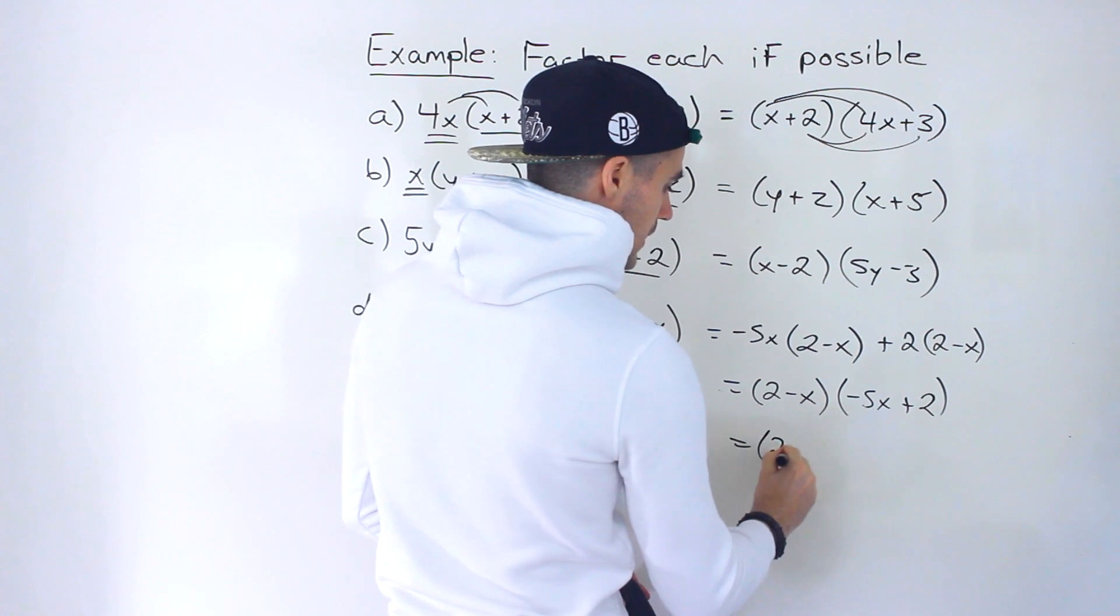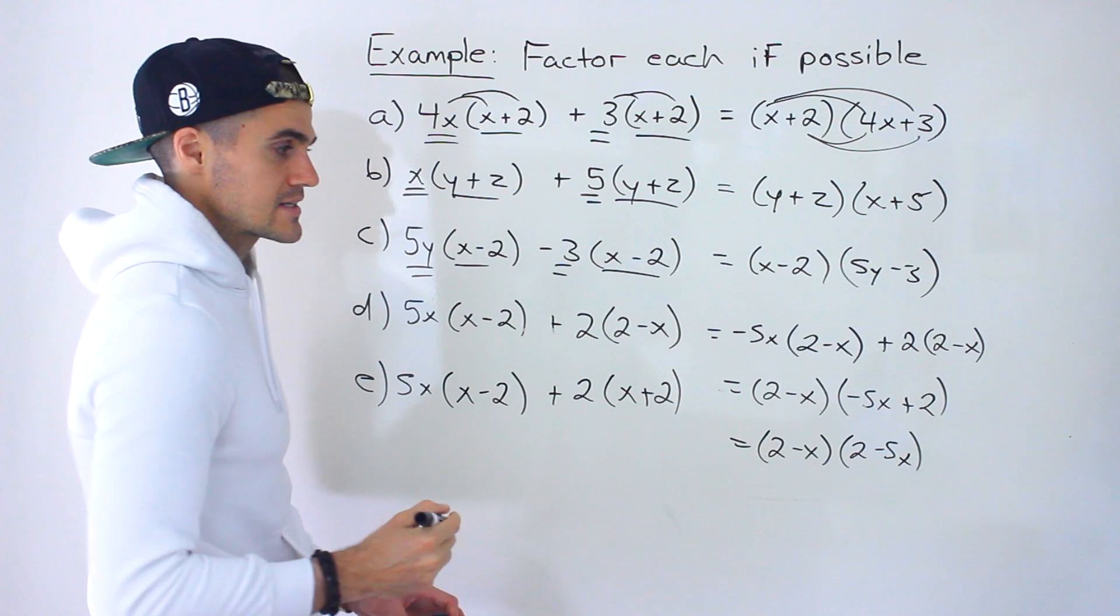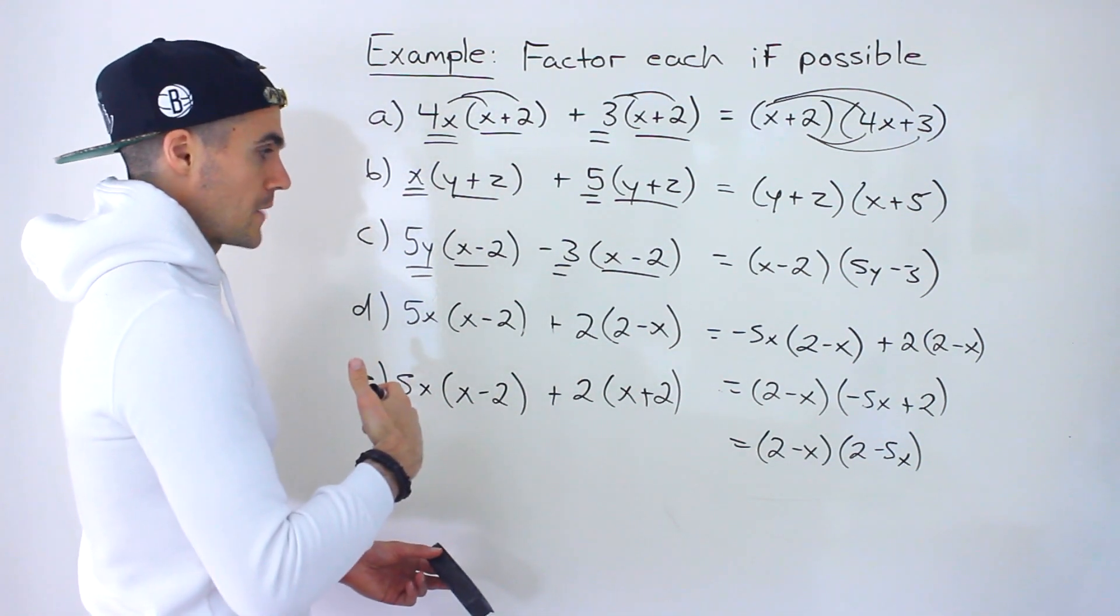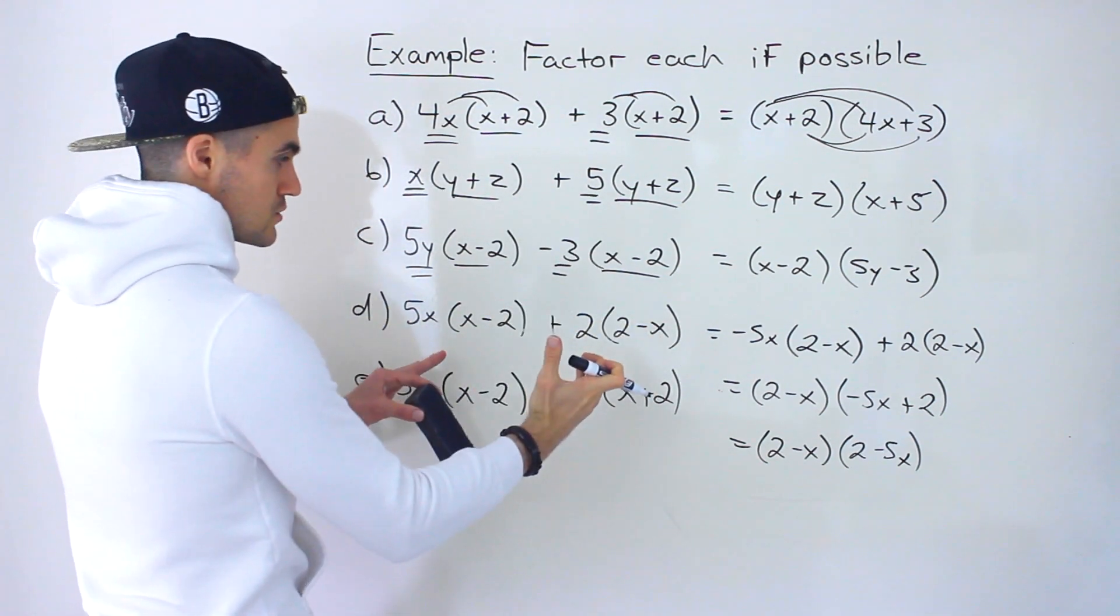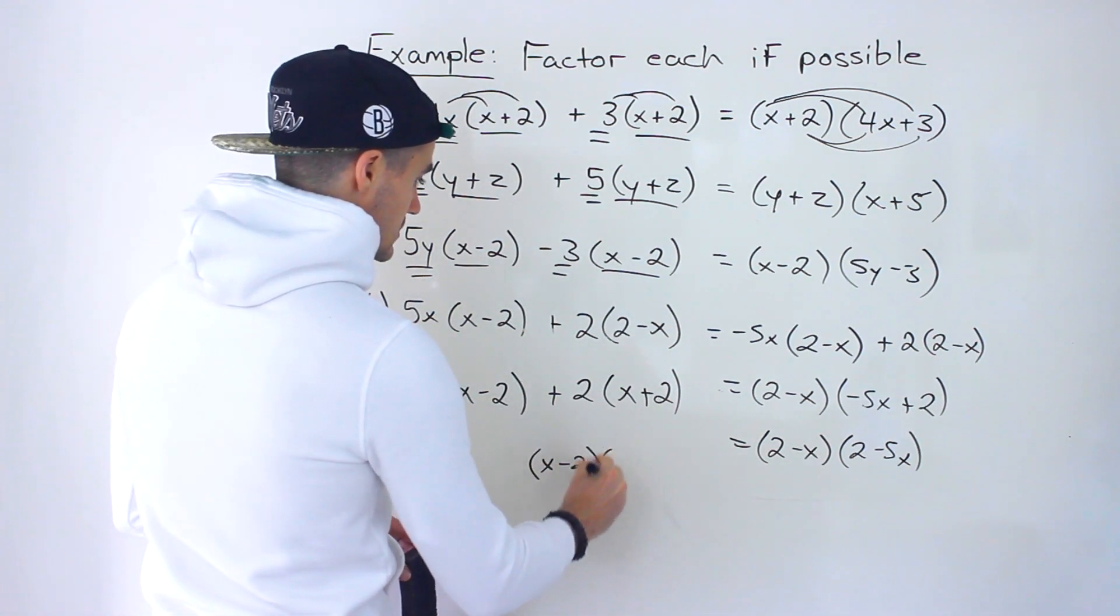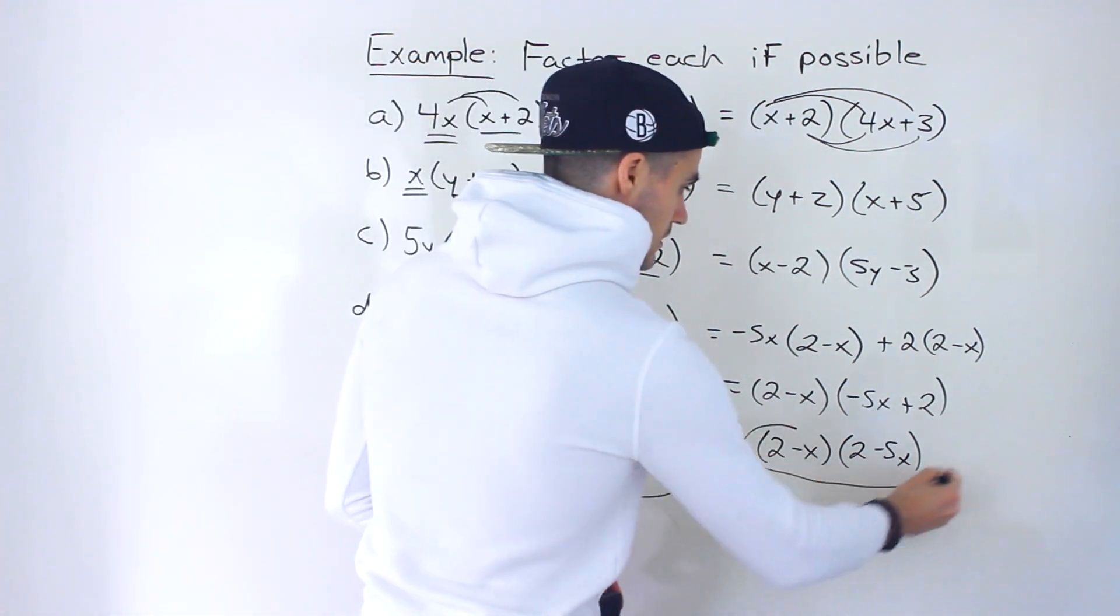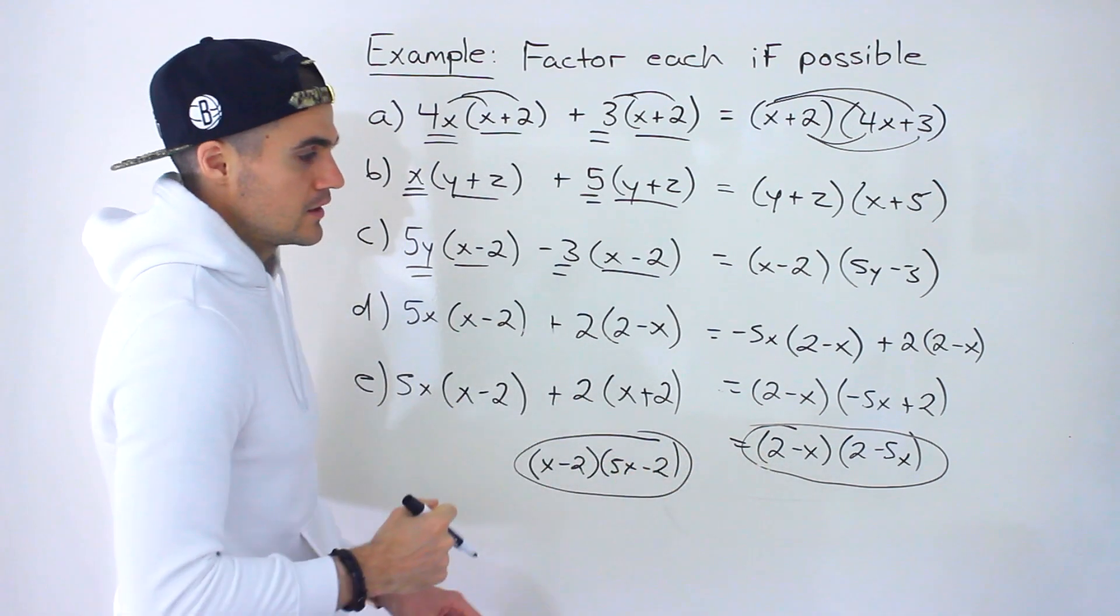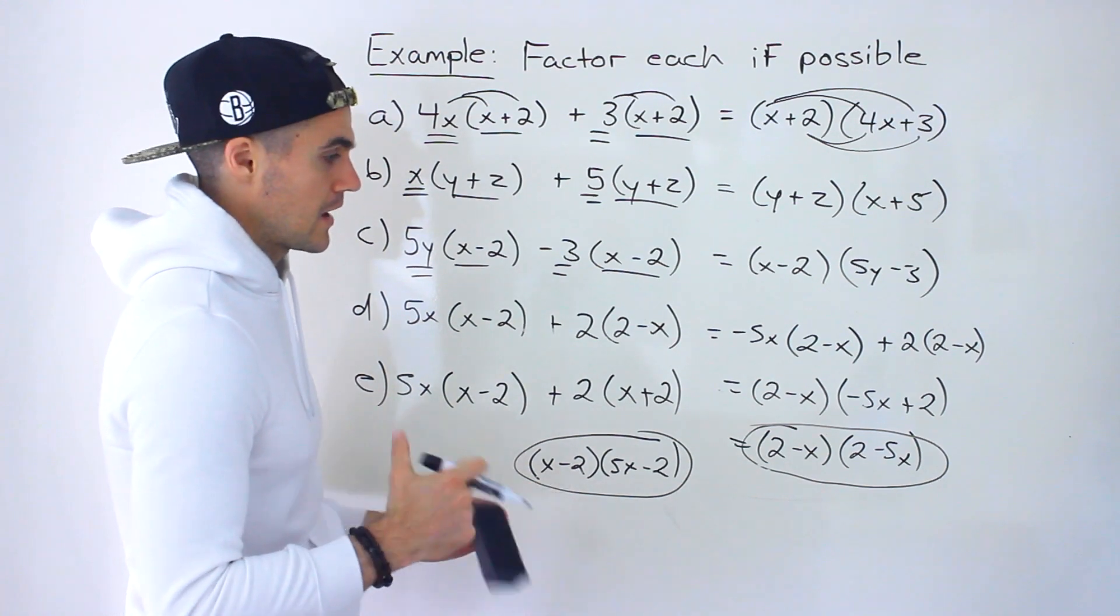You could also switch these. So we'd have 2 minus x, 2 minus 5x. Okay, so that's another potential solution. But I feel like the other format is nicer. I've taken out the negative here and then having x minus 2 times 5x minus 2. Okay, x minus 2 times 5x minus 2. This and this, they're the exact same thing. If you were to expand this, if you were to expand that, simplify it, okay, you'd get the exact same thing.